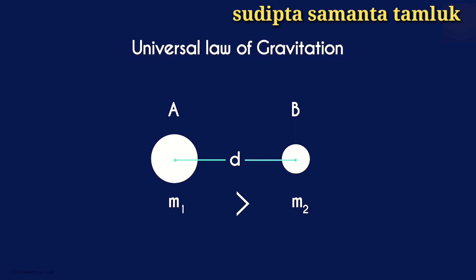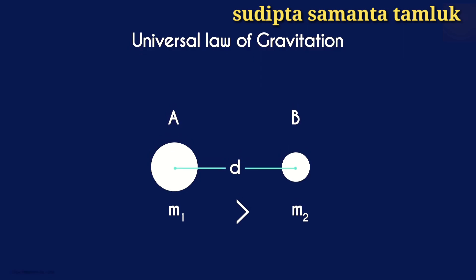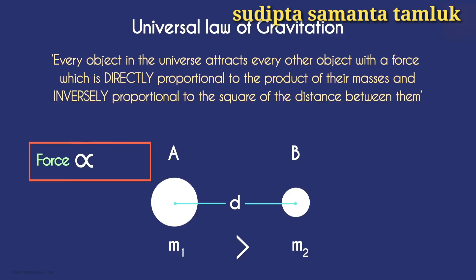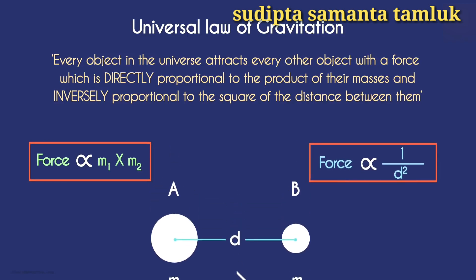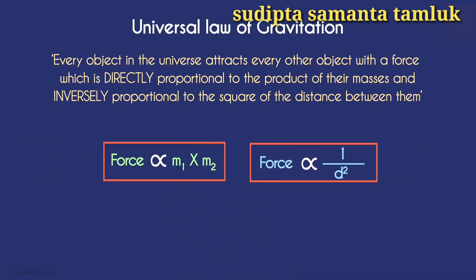The universal law of gravitation says that the force is directly proportional to the product of their masses and inversely proportional to the square of the distance between them. With this data, we can write it mathematically.